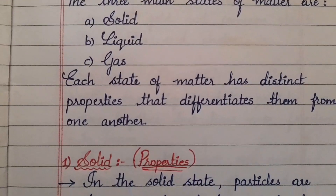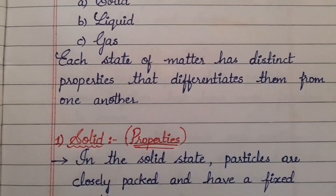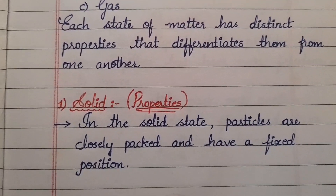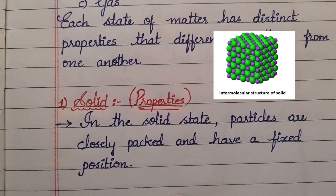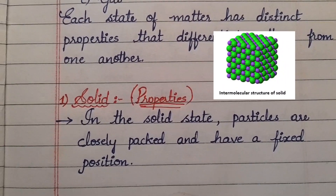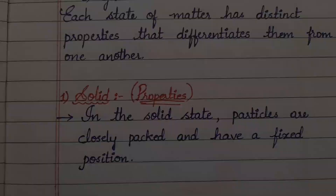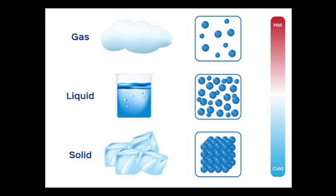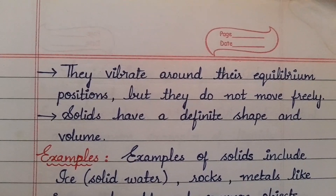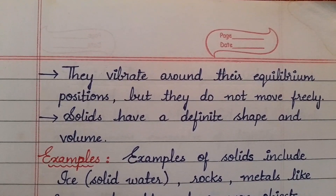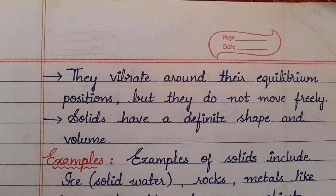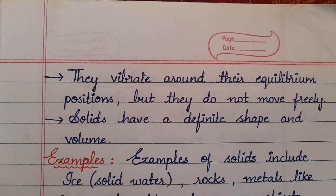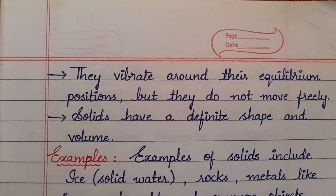First, let us look at the properties of solids. In the solid state, particles are closely packed and have a fixed position. They vibrate around their equilibrium positions but do not move freely. Solids have a definite shape and volume.